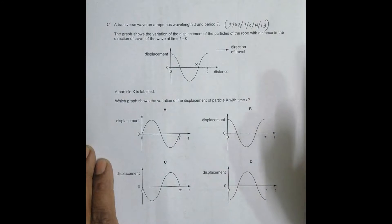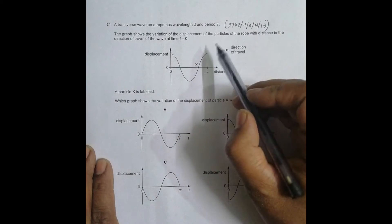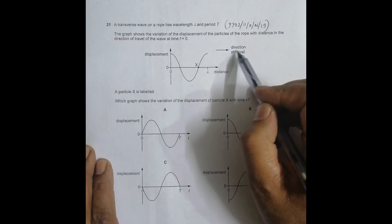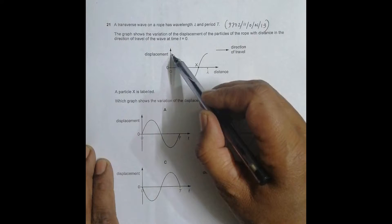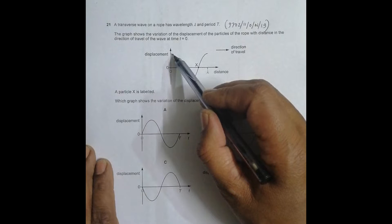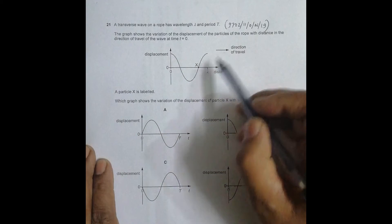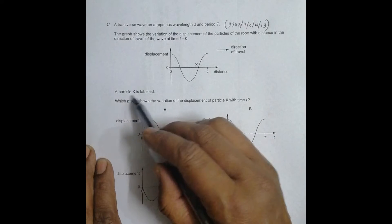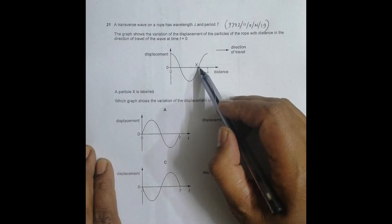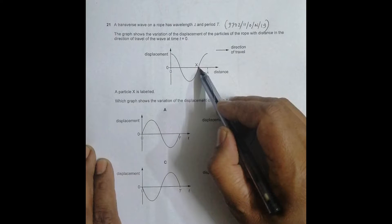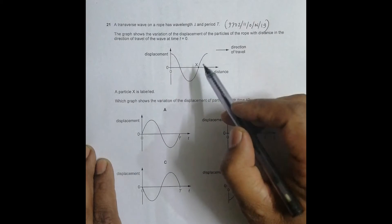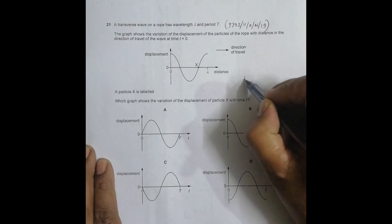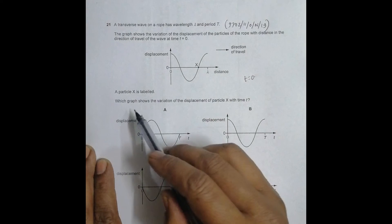This shows a wave at a certain time, t equal to zero. As time passes, the wave will travel in the given direction of travel, so this crest will move to the right. A particle X is labeled, and right now particle X has a displacement of zero at time t equal to zero.